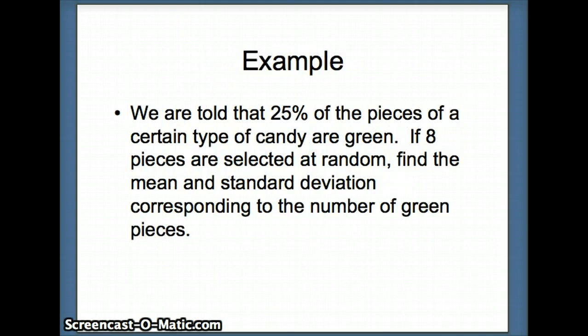So here's an example. We're told that 25% of the pieces of a certain type of candy are green. If eight pieces are selected at random, find the mean and the standard deviation corresponding to the number of green pieces.